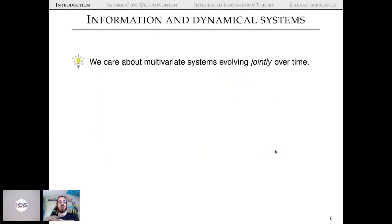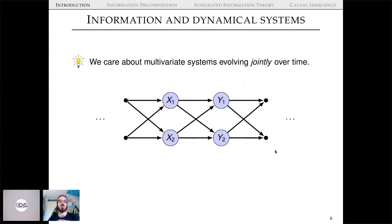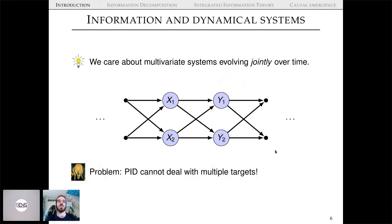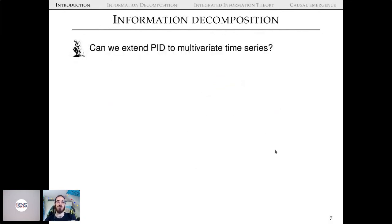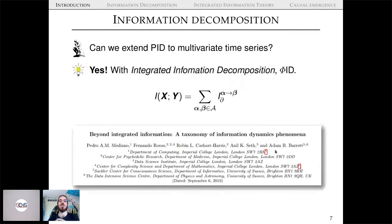What we care about in this talk is multivariate systems evolving jointly over time. In the diagrams I'll use, time goes from left to right, X denotes the past, Y denotes the future, the system is assumed Markovian, and sub-indices denote which time series. Ideally we'd decompose the information X1 and X2 jointly have about Y1 and Y2, but standard PID can't handle multiple targets.